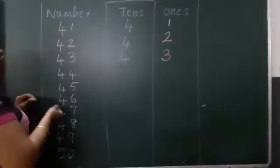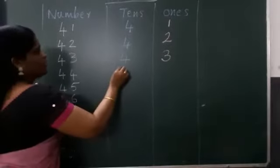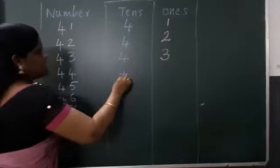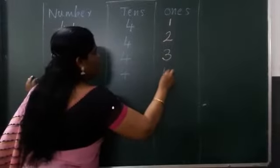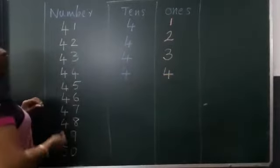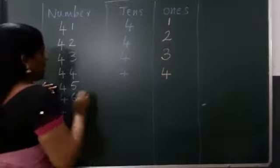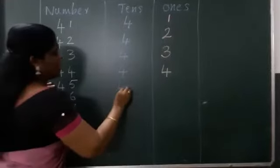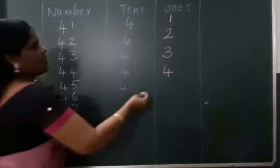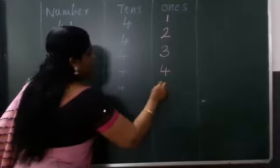Good. 4, 4, 44. Yes, 4 tens and 4 ones. Next 4, 5, 45. 4 tens, 5 ones.